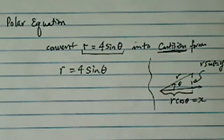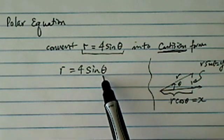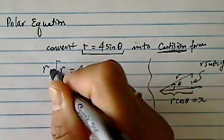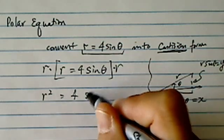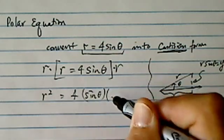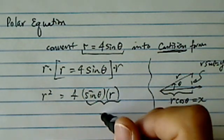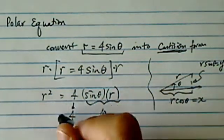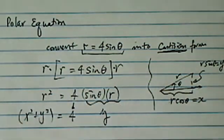So do whatever you have to get into the r times something. Now here obviously you don't have r so the big clue is let's multiply r on both sides. So you have r squared over here and then you have 4 sine theta times r. Obviously here r times sine theta we are happy because that becomes a y.